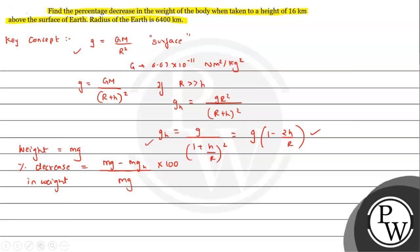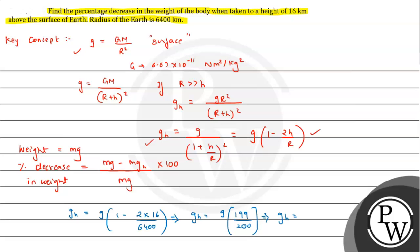Now let's calculate the percentage decrease in weight. First, let's find g_h: g_h = g × (1 − 2 × h/R). Here h = 16 km, which is very small compared to the radius of Earth 6400 km, so 16/6400 gives us g_h = 0.995 × g.